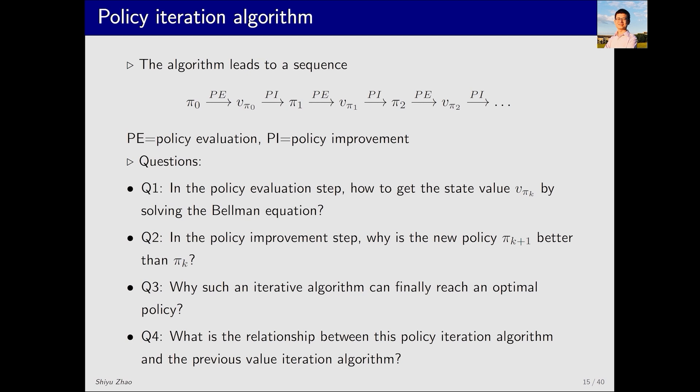This process can be represented like this. Initially, I have an initial guess π0, which usually isn't a good policy. Then I do policy evaluation to get vπ0, followed by policy improvement to obtain π1, then vπ1, π2, vπ2, and so on. How exactly is this algorithm implemented? We put that aside for a moment.